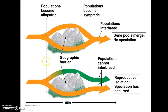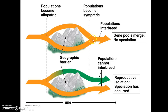Here we have time on the x-axis. This dashed line represents when populations represented by the orange lines became allopatric — they were separated by a geographic barrier in the form of a mountain range. Over a period of time, the two populations maintained separate status, and then we have a period of time in which the populations again become sympatric. Perhaps they expanded their range to eventually meet up at the end of this geographic barrier, and now those populations are sympatric once again.